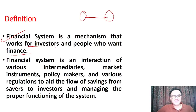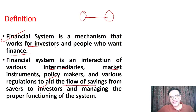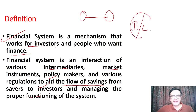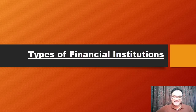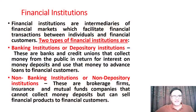In between those with money and those who need money, there exists a financial system. It is an interaction of various intermediaries, market instruments, policymakers, and various regulations to aid the flow of savings from savers to investors. That's why whenever you think about the financial system, borrowing and lending should come to mind. Financial institutions are generally of two types: banking and non-banking finance institutions.